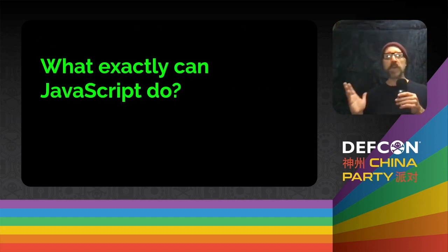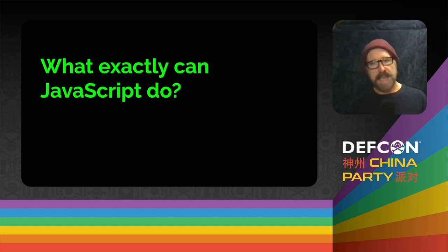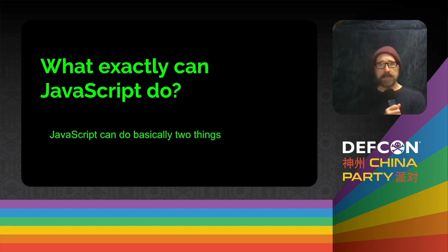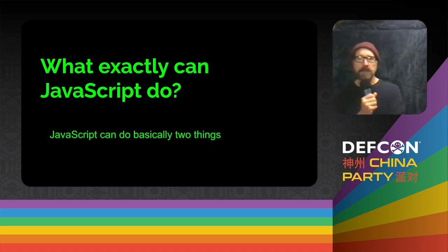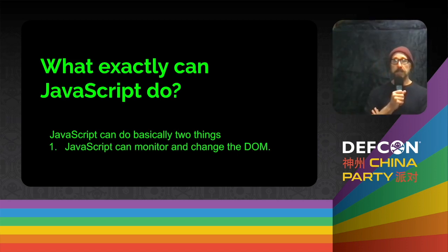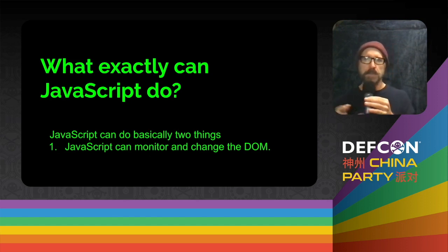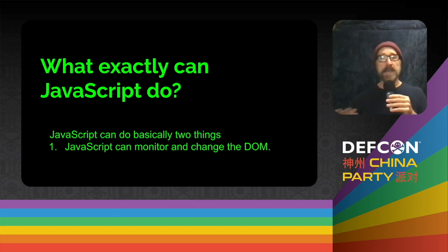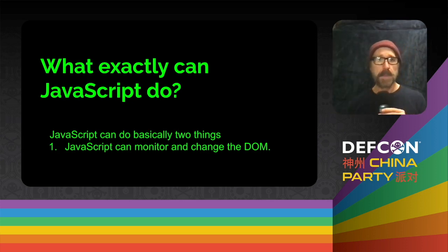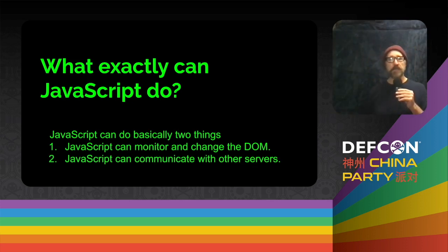Before we look at the threat, we need to figure out what exactly JavaScript is capable of doing. It's basically capable of doing two things. As you probably know if you're a developer, JavaScript operates on the DOM. So anything on a web page, JavaScript pretty much has access to it, with a few exceptions. It can not only access it, but also change things on the website. The other thing it can do is communicate with other servers using Ajax-type technologies.